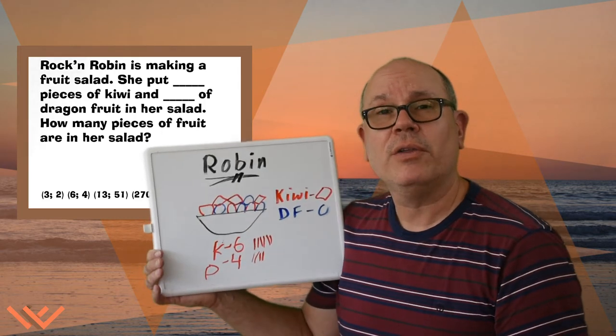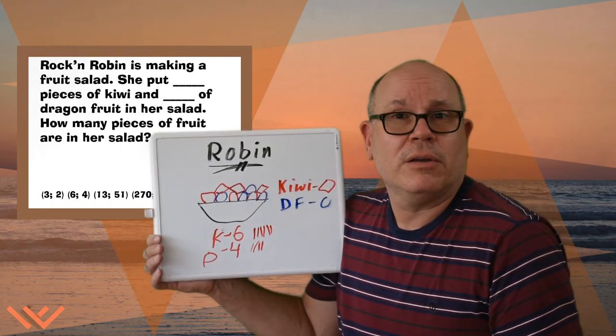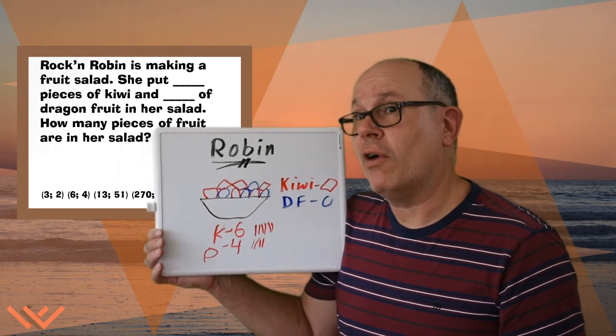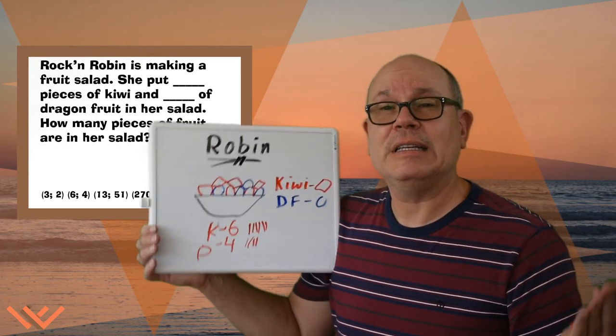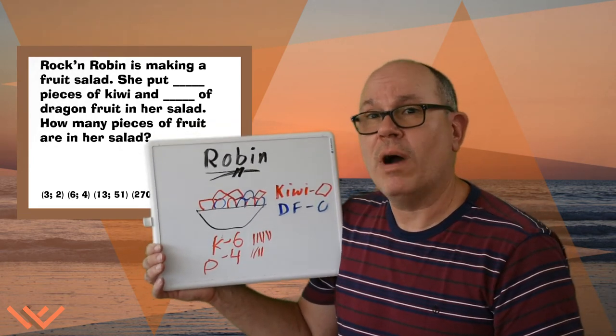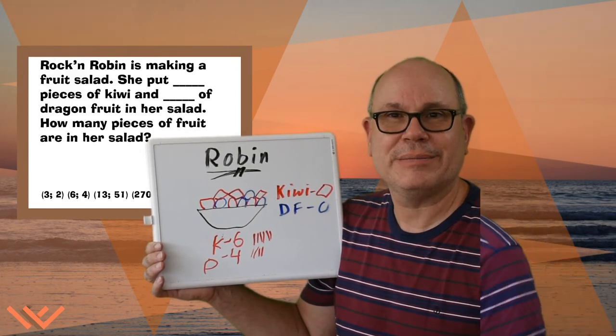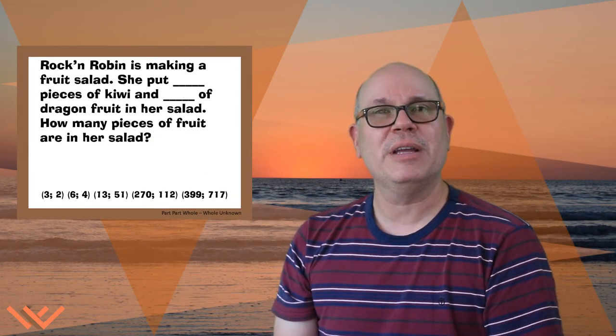There you go. There's many different ways that you can count it. Try your own strategy. Draw your own picture. Use the standard algorithm. But have a deeper understanding of what this problem is trying to get you to think about. Remember, to be a math person, all you have to be is a person that does math.